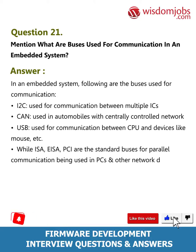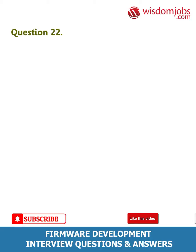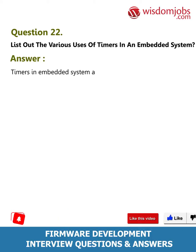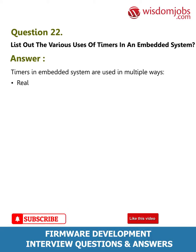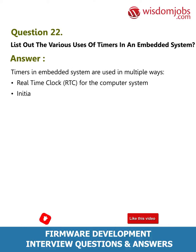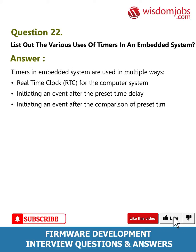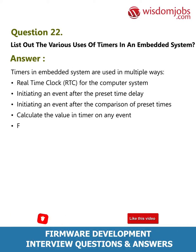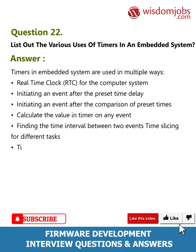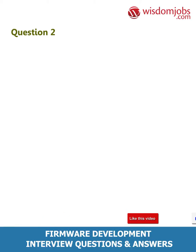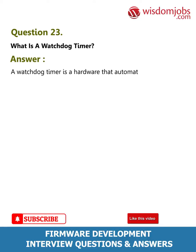Question 22: List out the various uses of timers in an embedded system. Answer: Timers in embedded systems are used in multiple ways: real-time clock (RTC) for the computer system, initiating an event after a preset time delay, initiating an event after the comparison of preset times, calculating the timer value on any event, finding the time interval between two events, time slicing for different tasks, time division multiplexing, and setting up various tasks in RTOS.